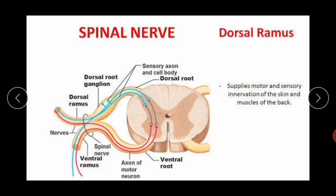You can see blue and red branches representing different and afferent nerves. The branches of the spinal nerve root are called rami. The group of rami forms the ramus. These branches divide into the dorsal ramus and ventral ramus.